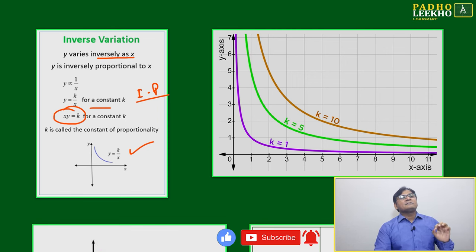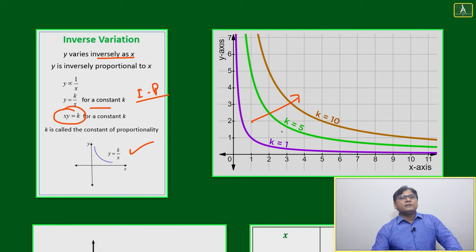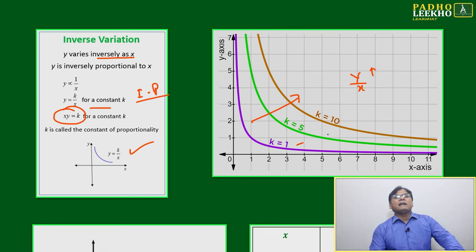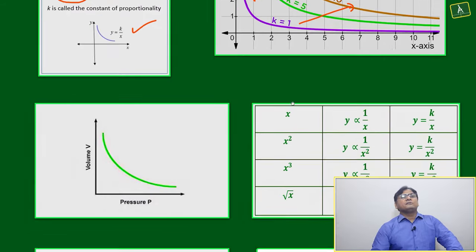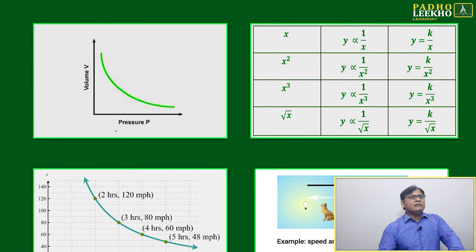For different slopes, if K is increasing, the curve is going away from this point. To increase K by a factor of two or three, either Y is increasing then X will decrease, or vice versa. As the value of K increases, it will go away from the origin, moving outside on the XY axis.